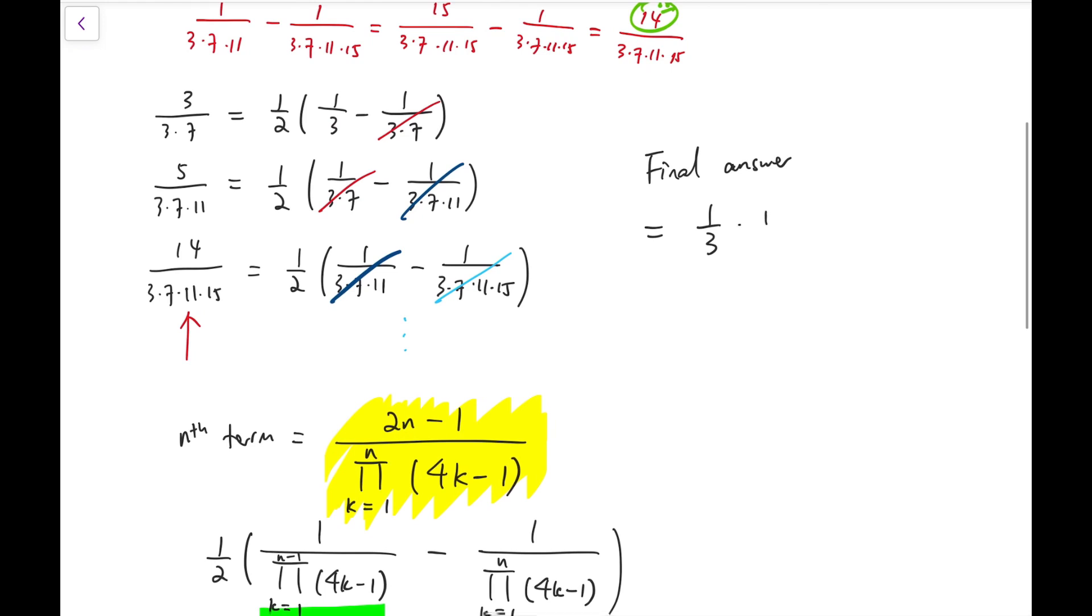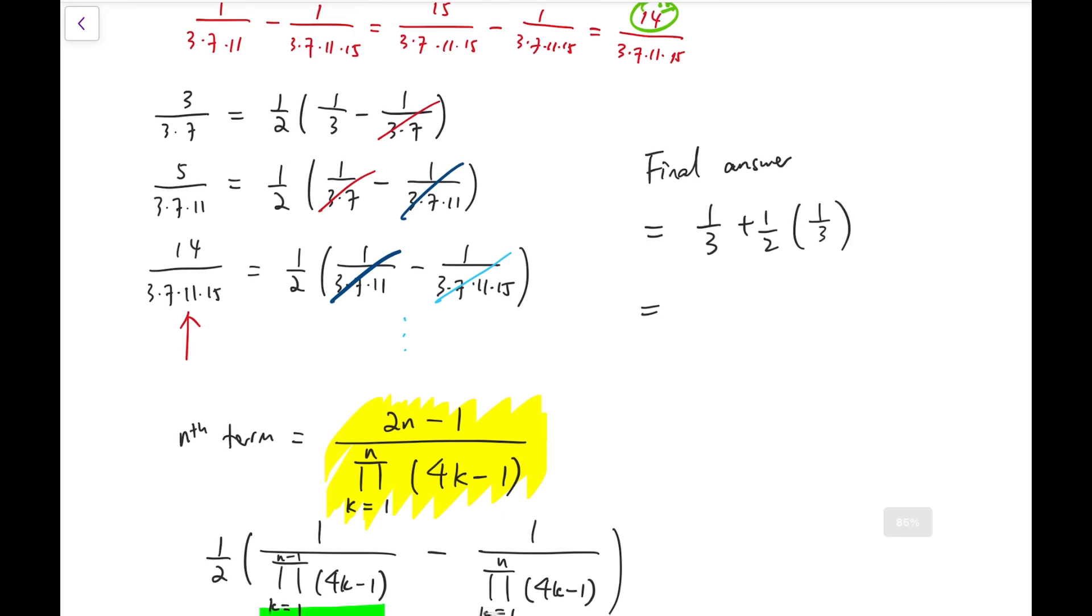So we add them back, one-third plus a half times one over three, and all other terms would cancel out as the sum goes to infinity. And for this part, it's very easy, it should be one-half. So, this is our final answer.